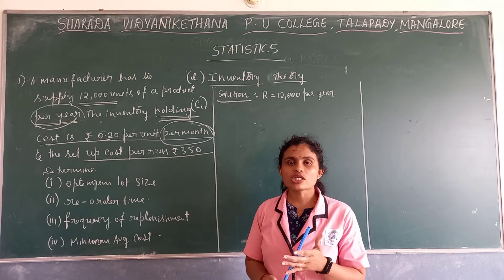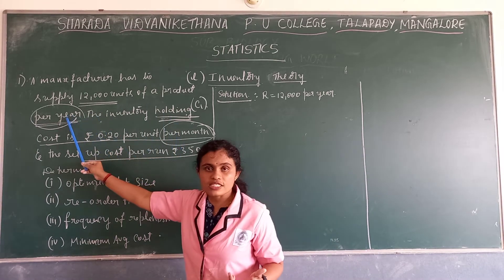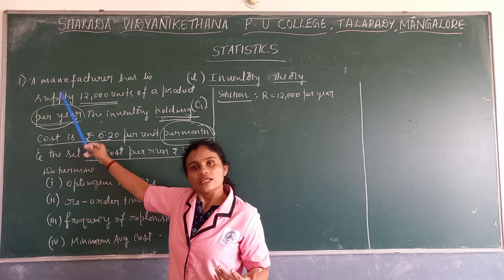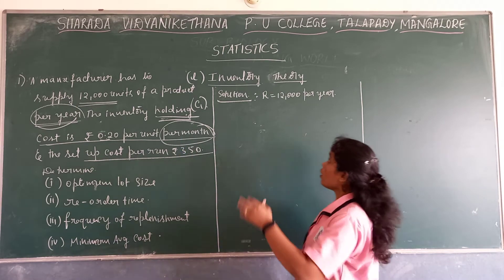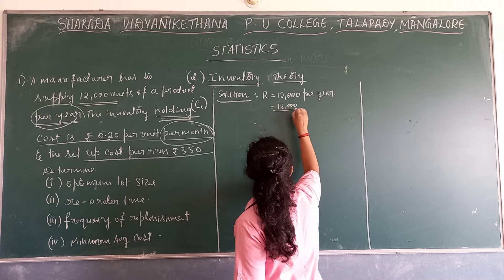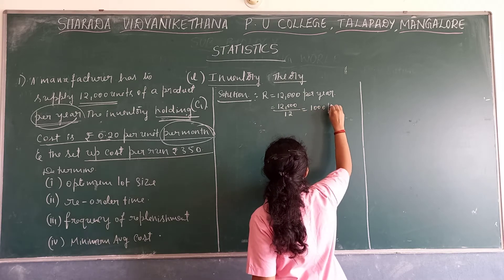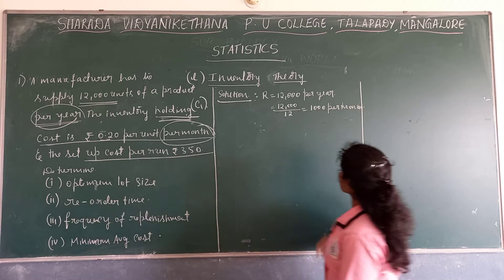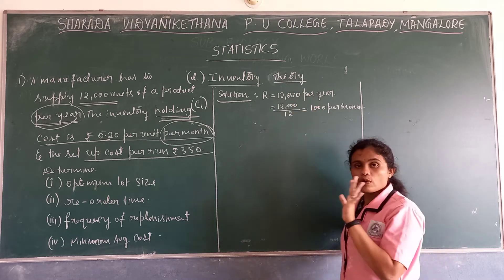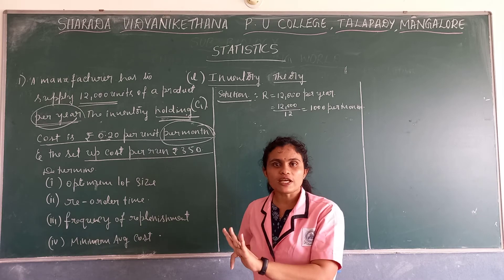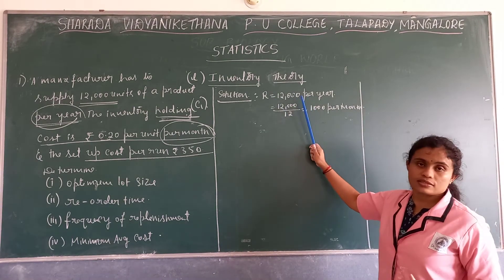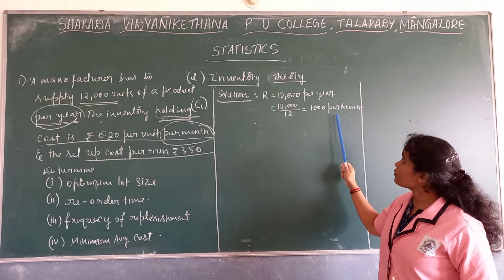We need to check whether the holding cost is per month or per year. If holding cost is per month and demand is per year, we convert demand into per month. If demand is per month and we need it per year, we multiply by 12; if we need to convert to per month, we divide by 12. Here the yearly demand is 12,000, so dividing by 12 gives us demand per month equals 1,000.